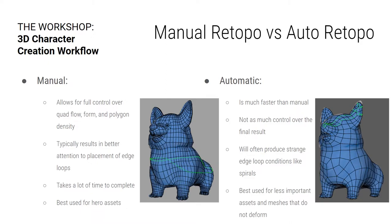If you have a character who's all the way in the background of a scene — like doing crowds, and there's one guy who's just two pixels on the screen — you could auto-retopo him. That's fine, not a big deal.